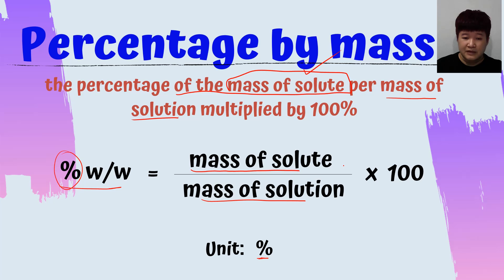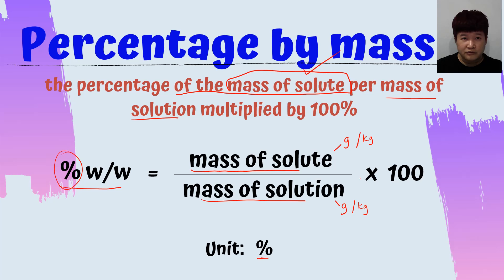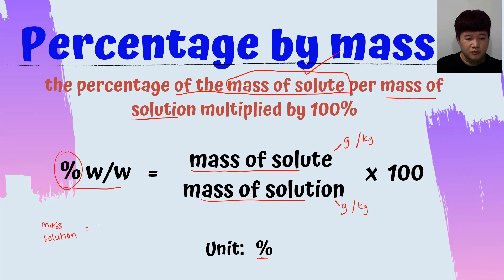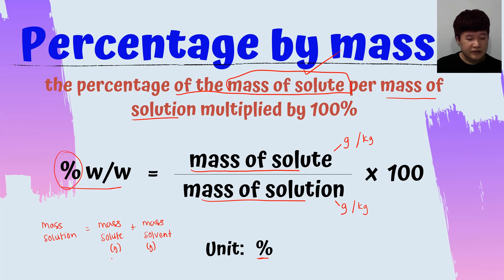When you look at the formula, you realize that for mass of solute and mass of solution there is no fixed unit shown — it can be in grams or kilograms. However, the units must be the same: if the mass of solute is in grams, the mass of solution must also be in grams. Remember that mass of solution equals mass of solute plus mass of solvent.